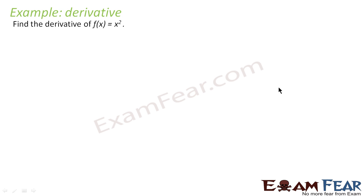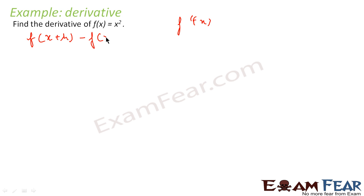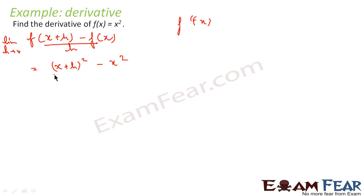We will take some more examples of derivatives. We have to find the derivative of f(x) = x². So that means we have to find f dash of x at any point — because we want the derivative at any general point, not just at a or b or c. So f dash of x is nothing but f of x plus h minus f of x, divided by h, where h tends to 0. We put this value here: this becomes x plus h squared, because f(x) = x². So it is x plus h squared minus x squared, divided by h, where h tends to 0.